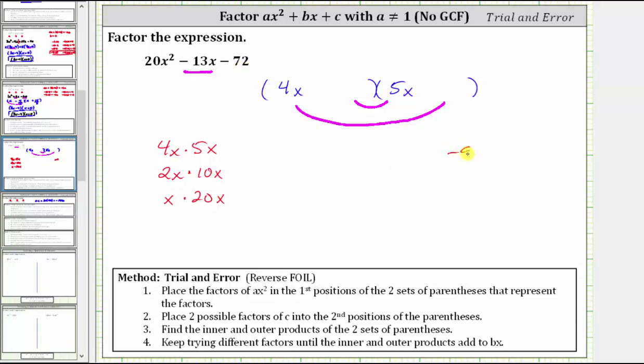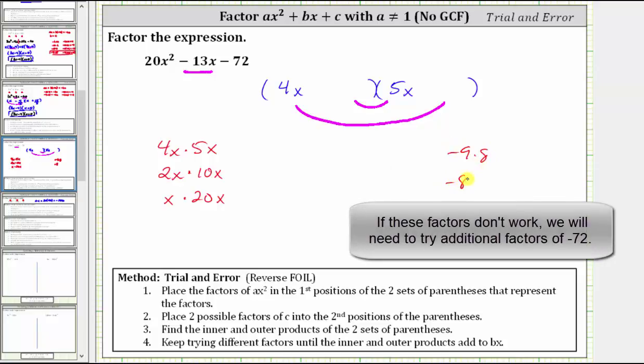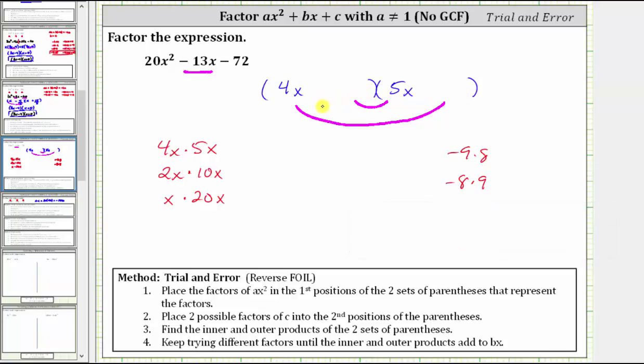Let's focus on the factors of negative 9 and positive 8, as well as negative 8 and positive 9. When placing these factors in the binomial factors, keep in mind, the binomial factors cannot have a common factor other than 1, because if they did, the original trinomial would have also had a common factor other than 1, which we already checked didn't.